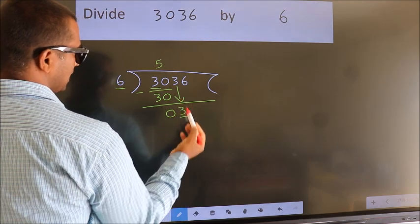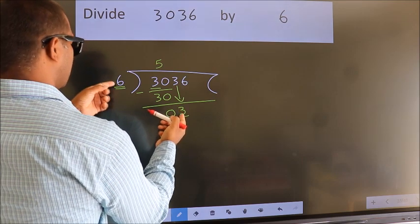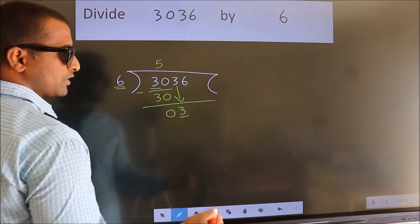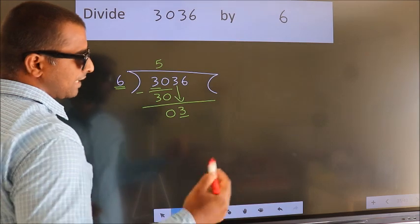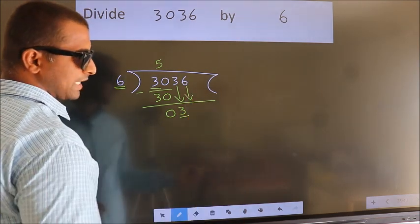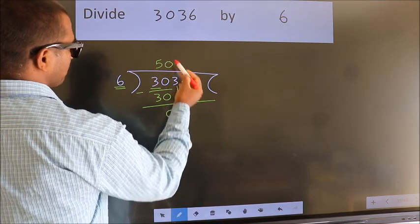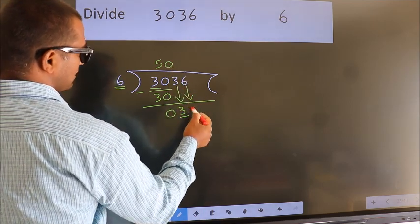Here we have 3. Here 6. 3 is smaller than 6. So, we should bring down the second number. And the rule to bring down the second number is put 0 here. Then only we can bring down this number.